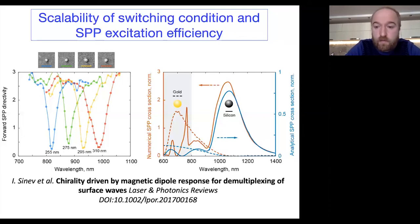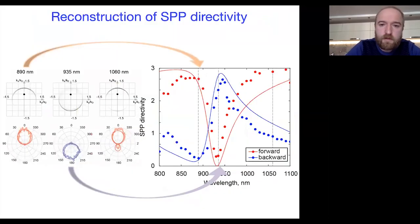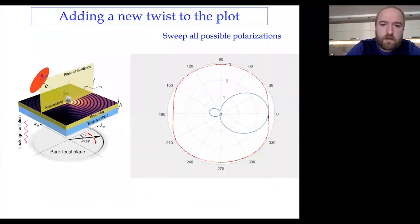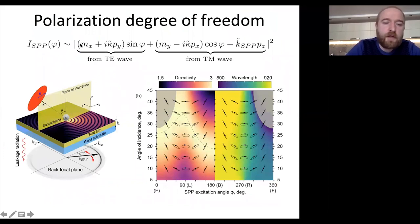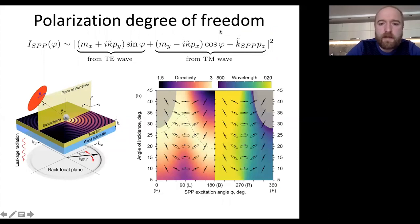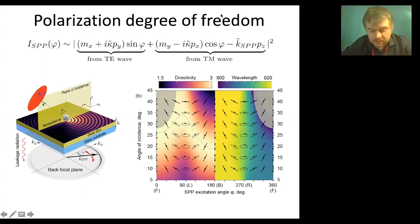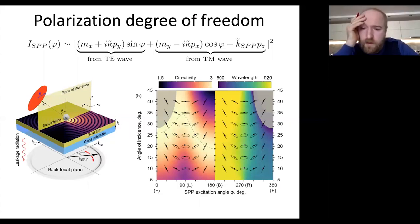These effective dipole moments account for the interaction with the substrate, including bianisotropy effects. A question from Maxim: what is the origin of the large discrepancy between the dipole model and full-wave simulation for the plasmonic particle? The mismatch comes from a hotspot formed between the plasmonic particle and the substrate — strong field localization means the effective center of mass of the particle is closer to the substrate. In the dipole approximation, placing the point dipole closer to the substrate would improve the matching. This effect is described in works on substrate-induced bianisotropy.